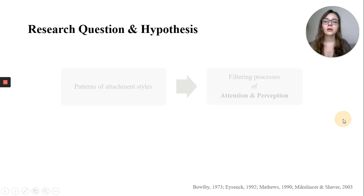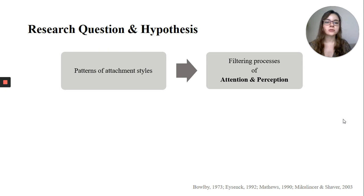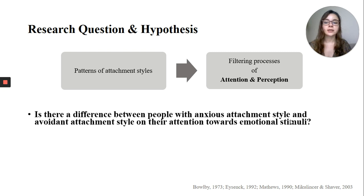These patterns of attachment styles actually affect the filtering processes of attention and perception. Regarding this statement, we came up with this research question: Is there a difference between people with anxious attachment style and avoidant attachment style in their attention towards emotional stimuli?